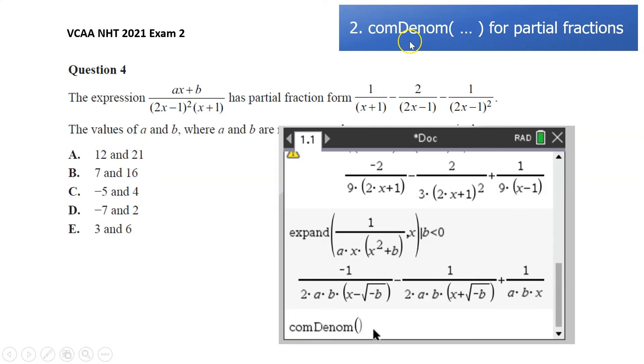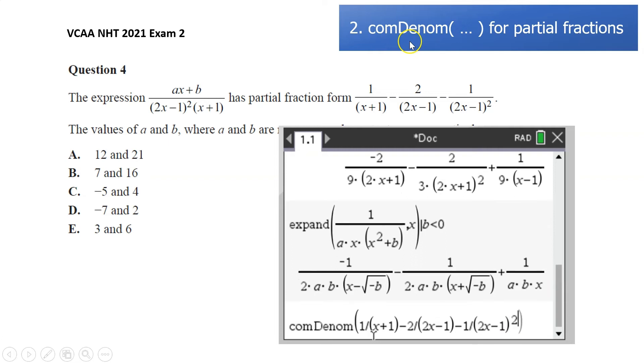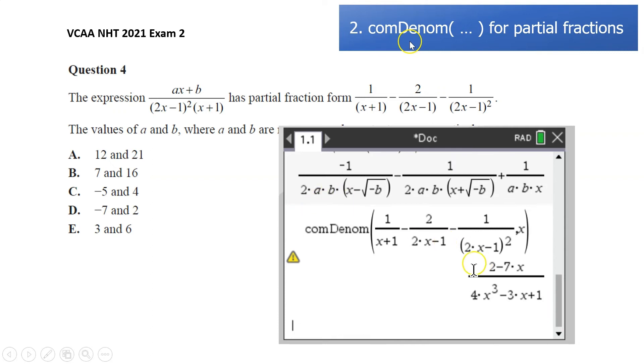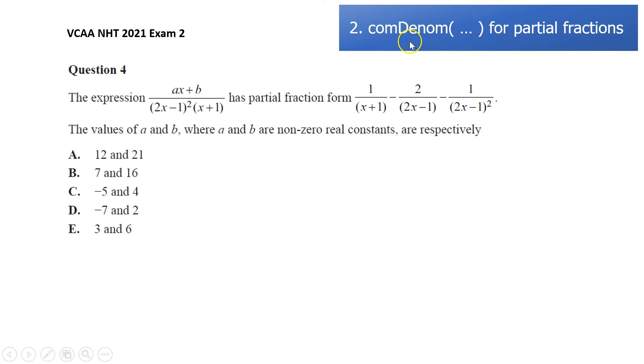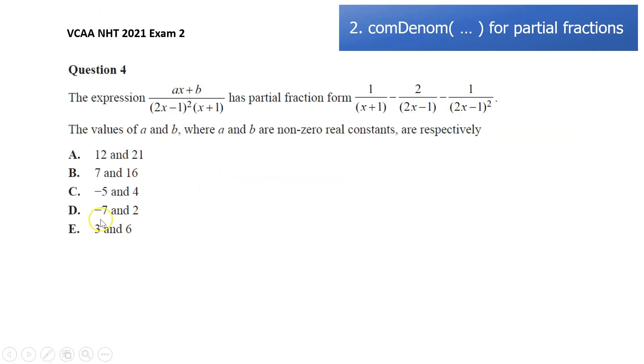And again, we've got to type this in. So 1 over x plus 1 minus 2 over 2x plus 1, and just make sure to type it in correctly, 2x minus 1 minus 1 over 2x minus 1 all squared. Common denominator, I don't think we'll need a common x for that one, but again, just double check if typed it in correctly. And looking good, we've got 2 minus 7x over our denominator. So we'll be looking at a equals negative 7 and b is equal to 2. So common denominator for going the other way.